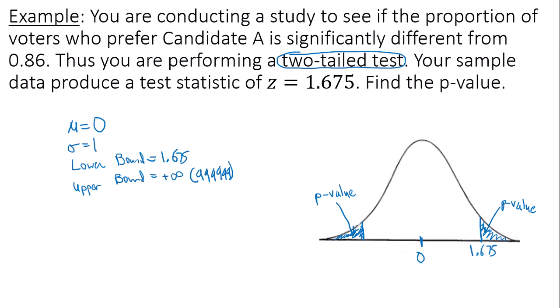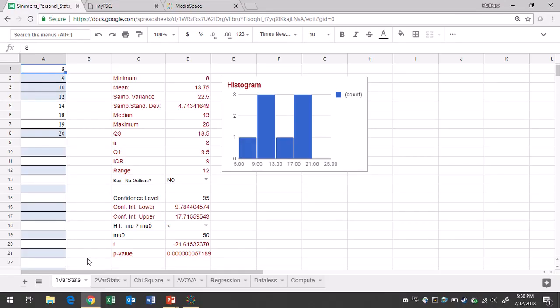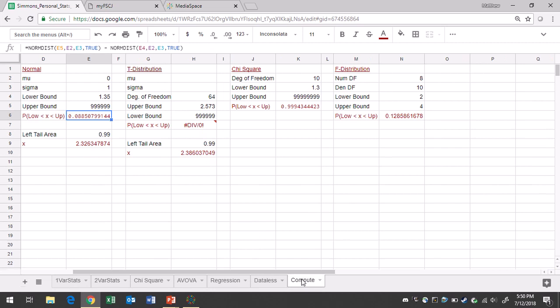So now we go to Google Sheets. You'll want to go to the Compute tab. Under the normal region here, your mean is 0, standard deviation is 1, your lower bound is 1.675, your upper bound is 6, 9.